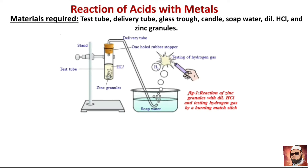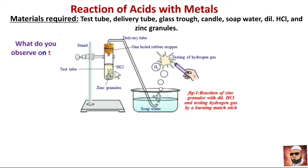Arrange the setup as shown in the figure. Take 10 ml of dilute HCl in the test tube and add a few zinc granules. What do you observe? You will observe gas bubbles on the surface of the zinc granules.